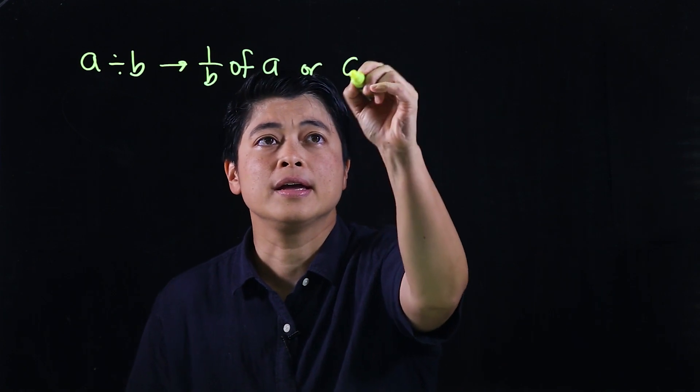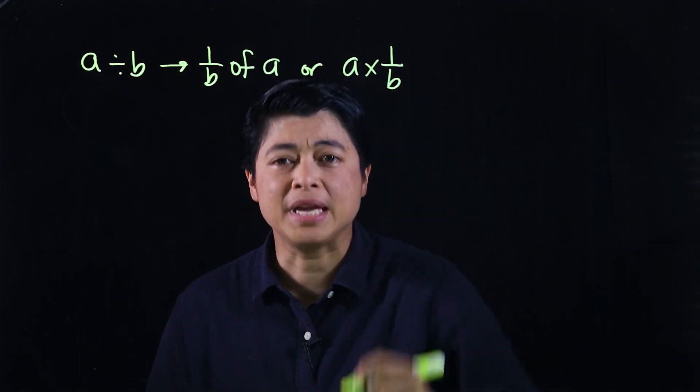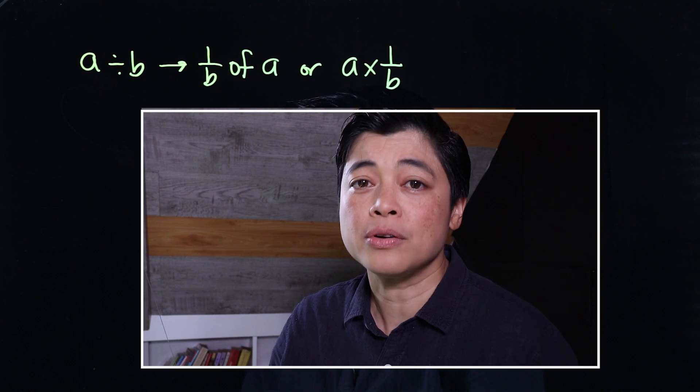Or a times 1 over b. We should know from the past when we see of, that means multiply. So when it says 1 over b of a, we're multiplying those.